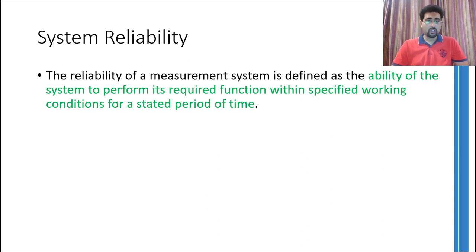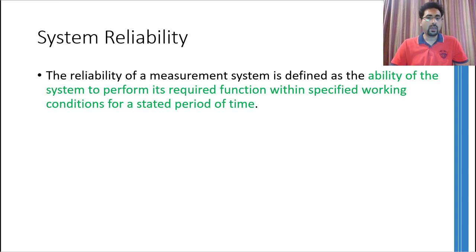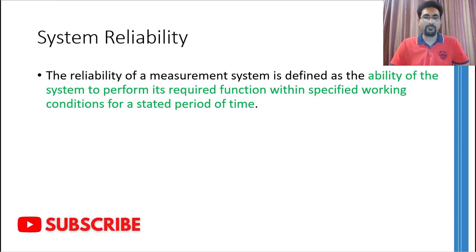You might have used the word reliable for your friend if he is available for you whenever you need him. Or you might have used this word for a certain device if that device doesn't fail you or is functional whenever you need it. Using these examples, we can define the term reliability: it is the ability of the system to perform its required function within specified working conditions for a stated period of time.